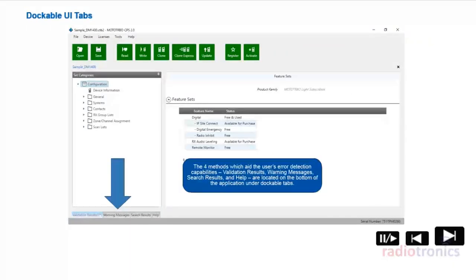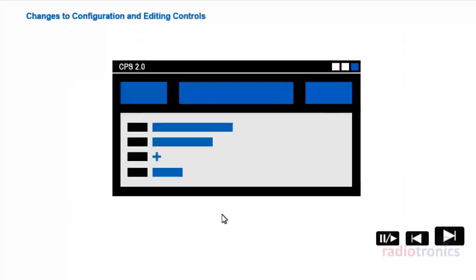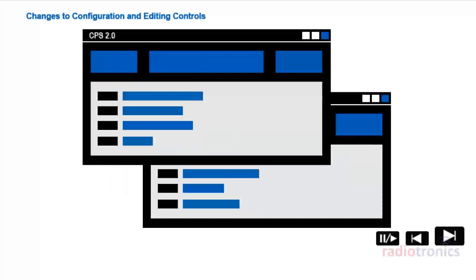CPS 2.0 introduces a grid-centric configuration, which will present the user with a total view and allow them to update multiple fields in a single window. The idea is to allow the user to add, edit, and delete data with the fewest clicks possible. Another important add-on includes the ability to open multiple code plug windows simultaneously. There is also a new workflow support to allow the user to copy and paste data across multiple open CPS 2.0 code plugs.